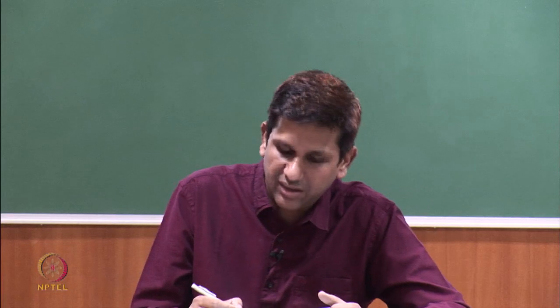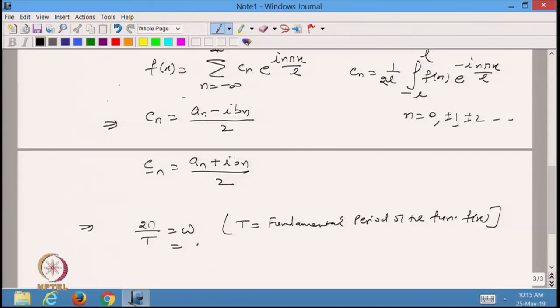We also know that cₙ = (aₙ − ibₙ)/2 and c₋ₙ is the complex conjugate of cₙ divided by 2. We now define ω = 2π/T, where T is the fundamental period of f(x) — the smallest period if the function has multiple periods. This ω is called the angular frequency. For a function with period 2l, the fundamental angular frequency is ω = π/l.